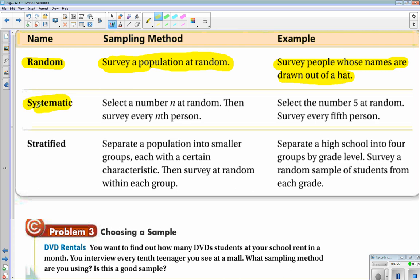Systematic sampling is when you select a number N at random, and then survey every Nth person. So, select the number 5 at random and then survey every 5th person. So, you let 1, 2, 3, and 4 walk through the 5th person you survey.